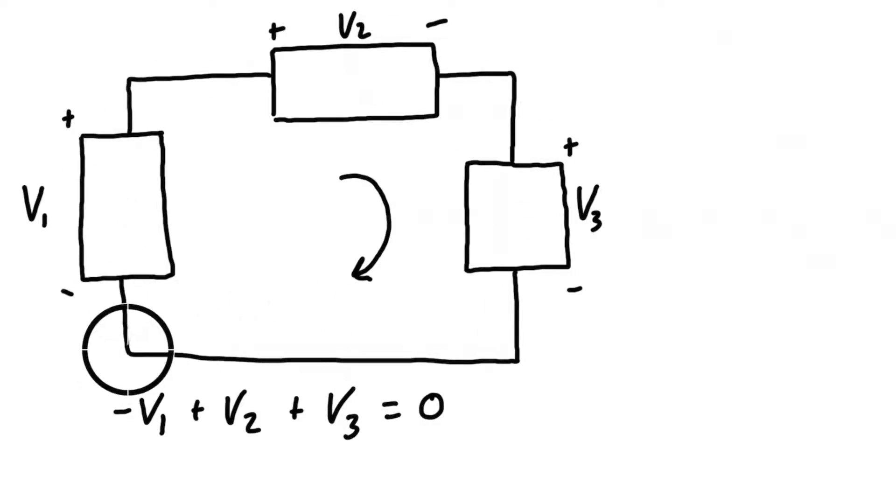This ensures that the voltage returns to the same point as we come around the circuit. Now this works if you have multiple branches as well.